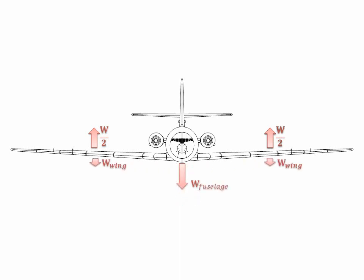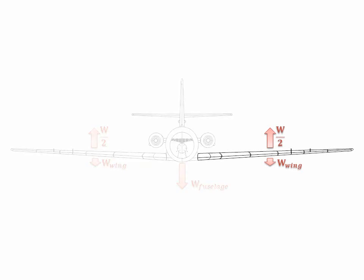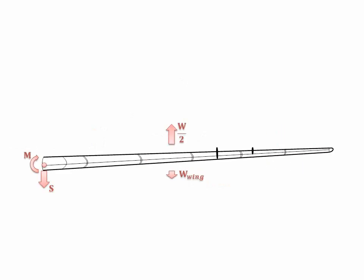To find the shear forces and bending moments in the wing, we have to separate it from the rest of the fuselage. Applying equilibrium again, we get this result.